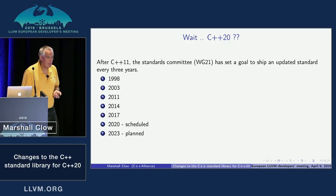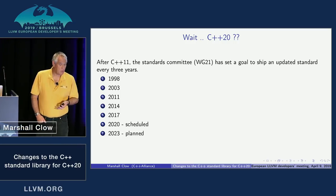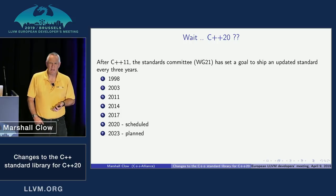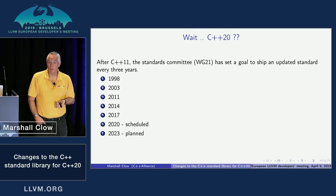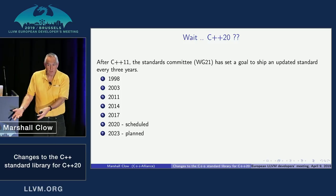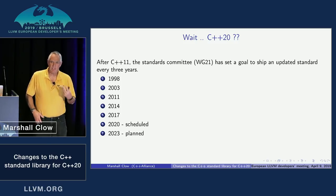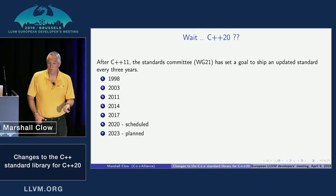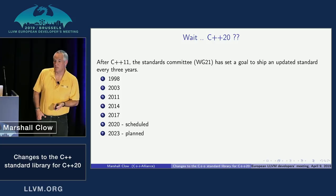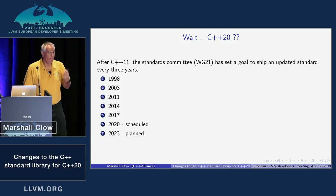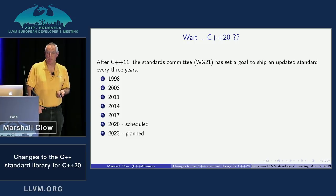This actually happened to me. I had a feature for the standard library I thought was going to be in 2014 — the Boyer-Moore string searching algorithms. At the last minute we discovered the specification was not quite right. I had code, an implementation, and users, but the specification didn't say in sufficient detail what was needed for others to implement it. So it was pulled back, reworked, and ended up in 2017.